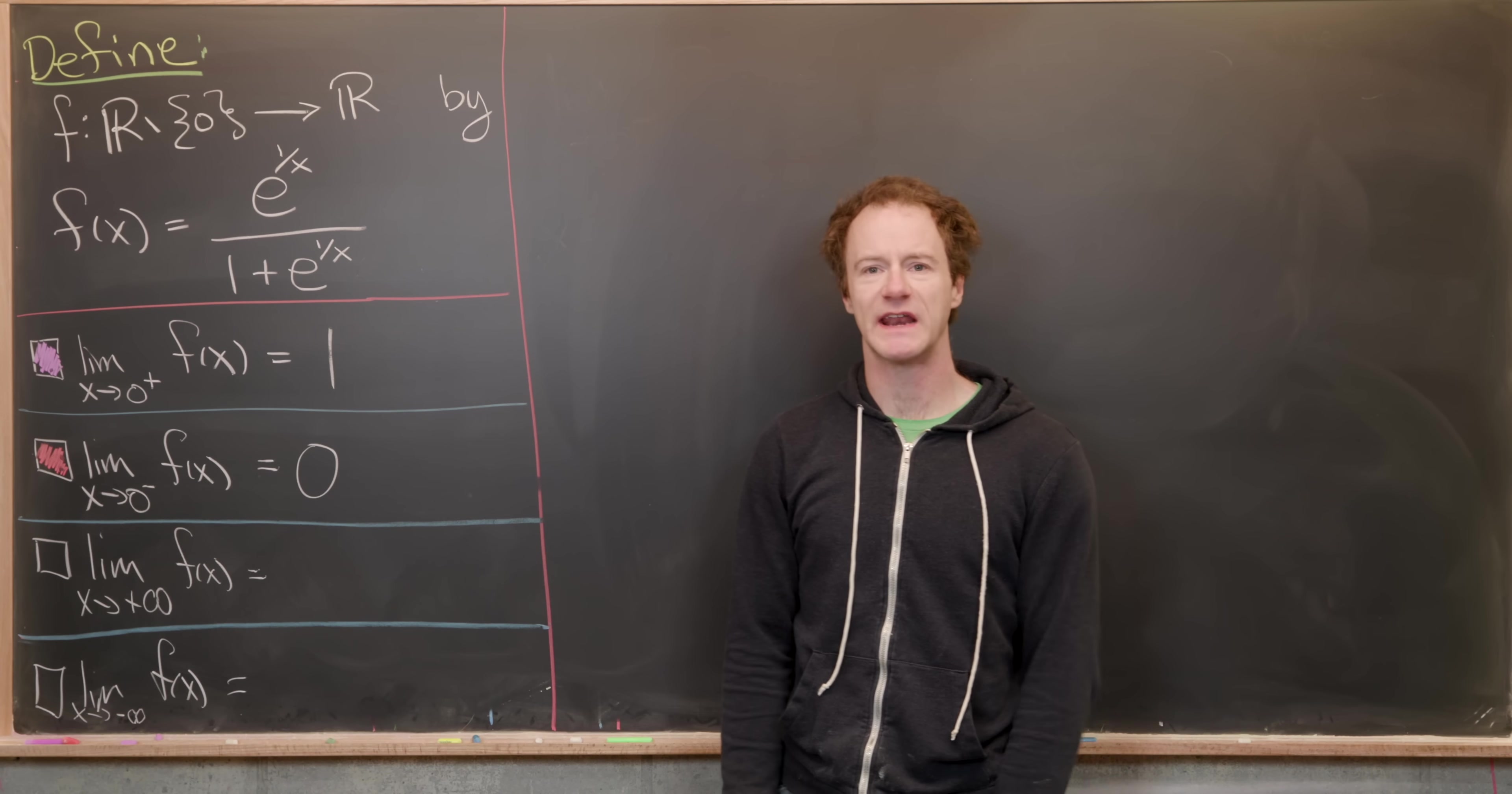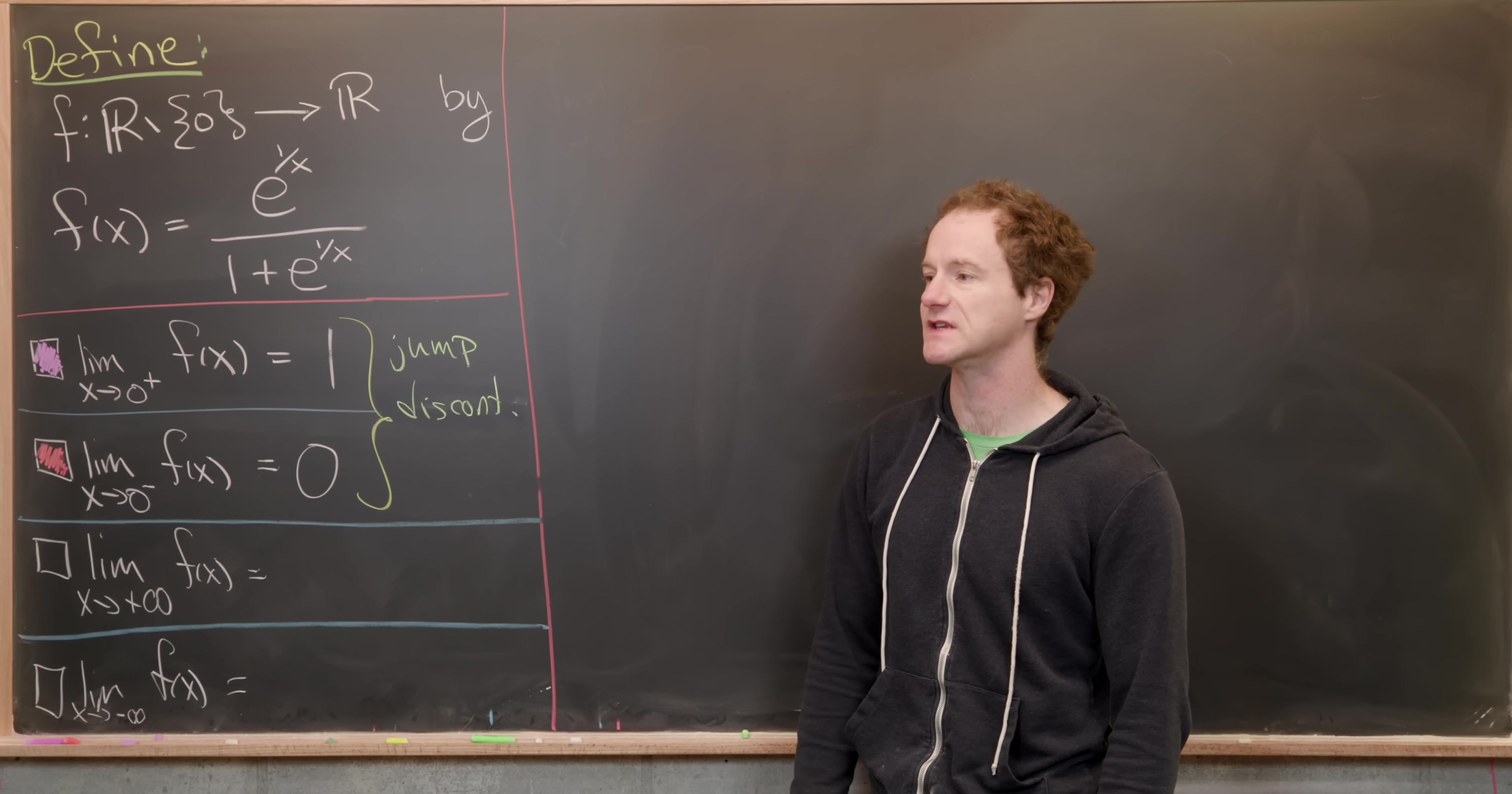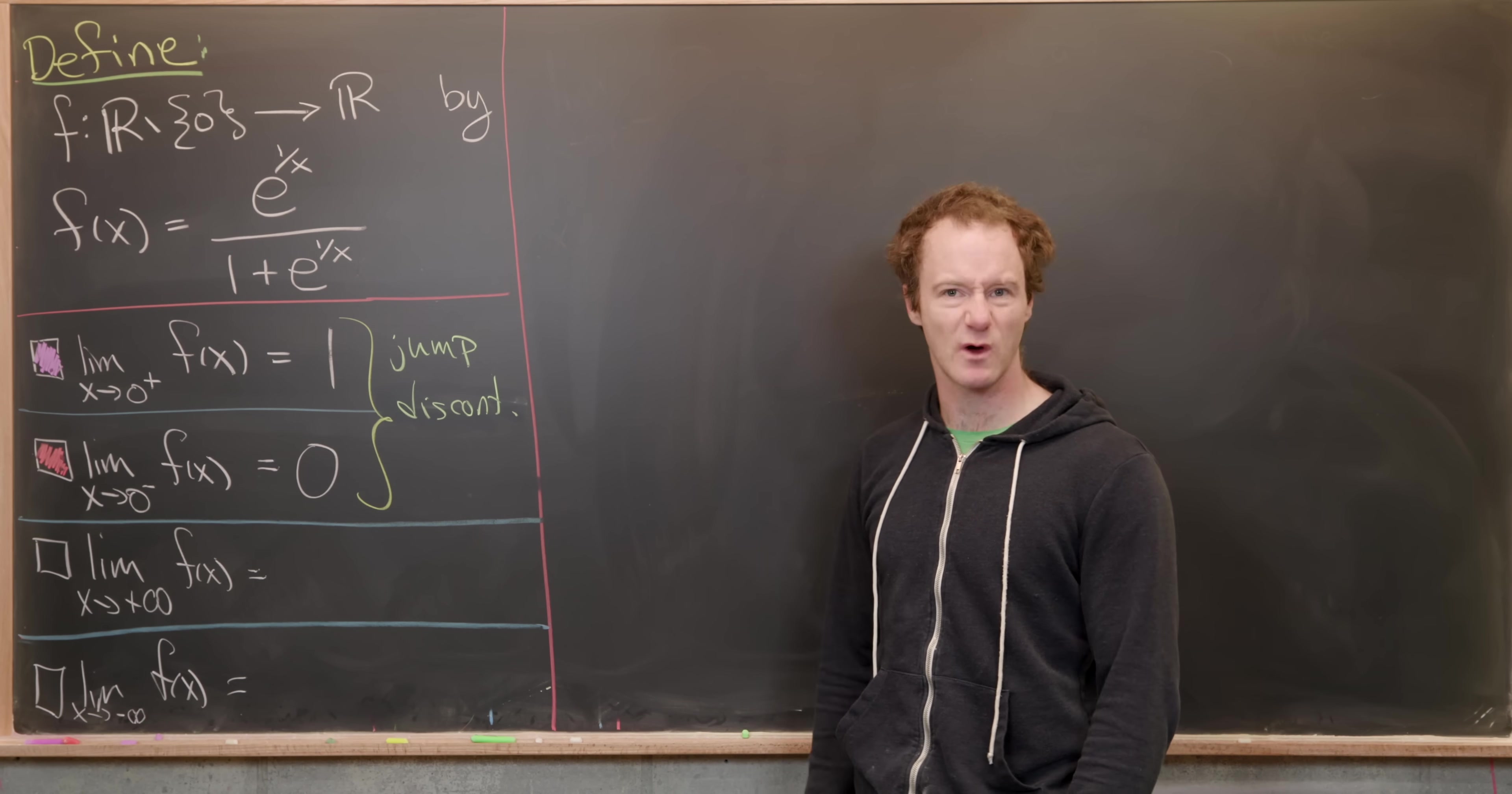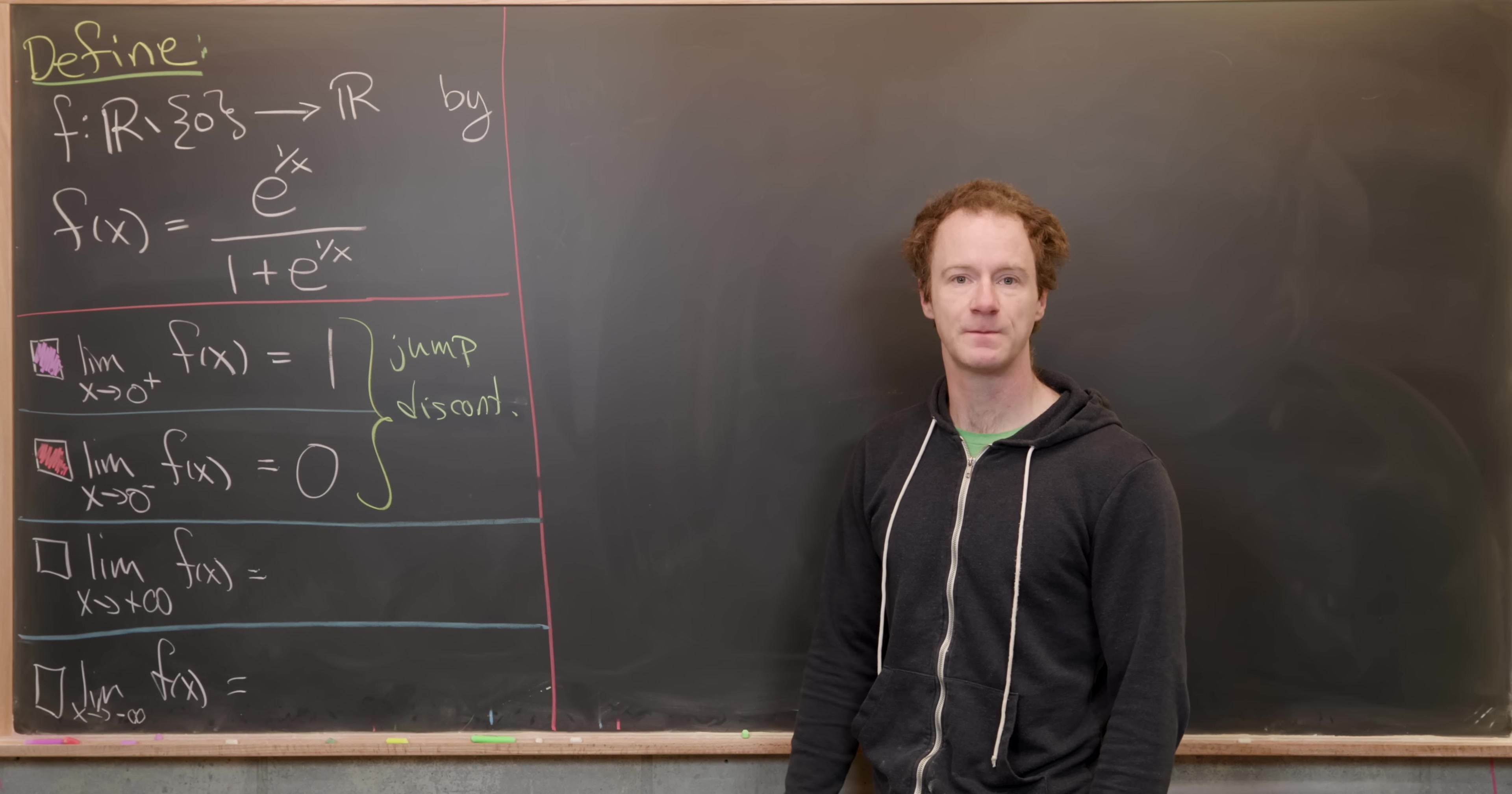So that means we've got a jump discontinuity at x equals zero. And I think that's pretty interesting, because generally when you give examples of jump discontinuities in a first semester calculus class, you generally have to construct them via piecewise functions. And so this is one that like appears in nature. So if you guys know any others that quote unquote appear in nature, maybe post them in the comments.